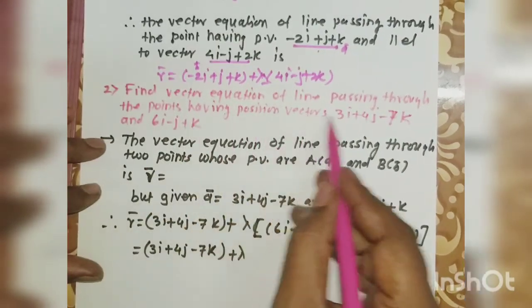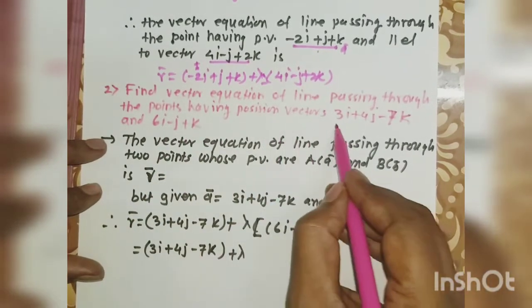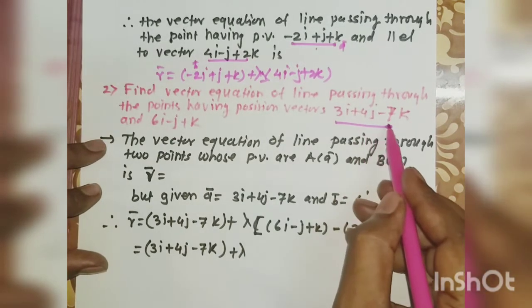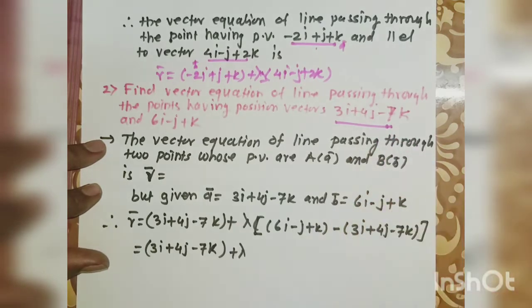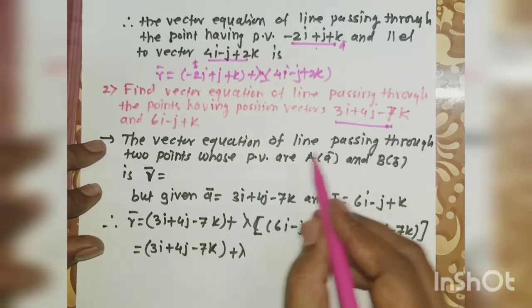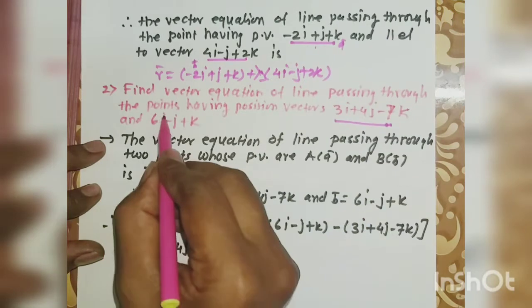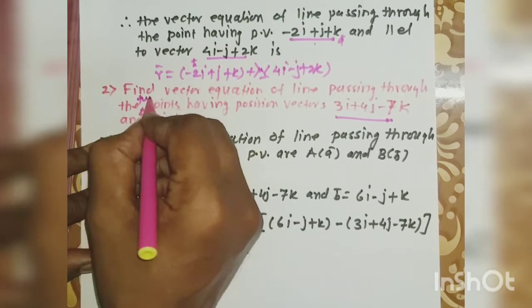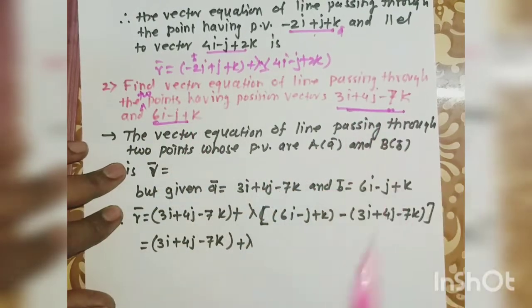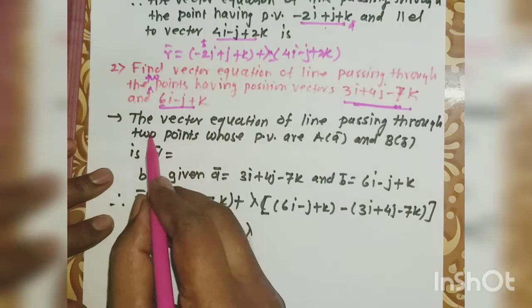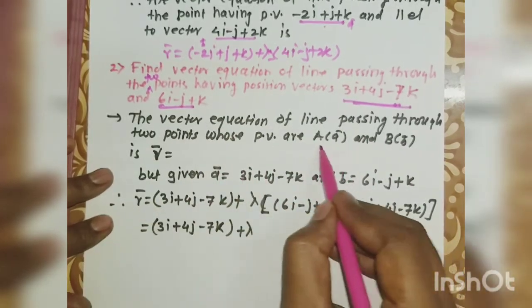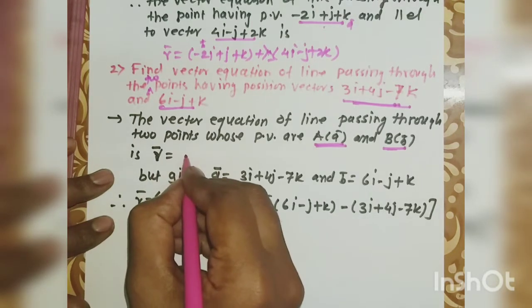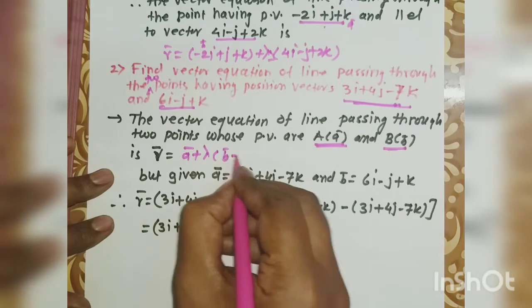The next question is: find the vector equation of a line passing through two points. The vector equation of a line passing through two points whose position vectors are capital Ā and B̄ is: r̄ = Ā + λ(B̄ − Ā).